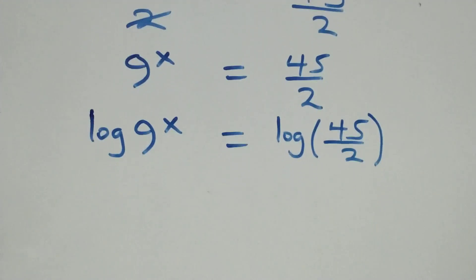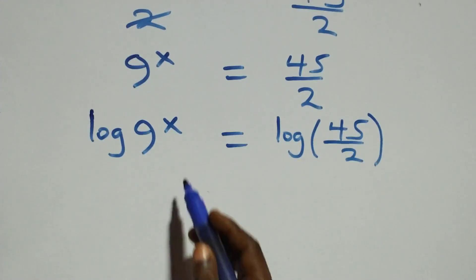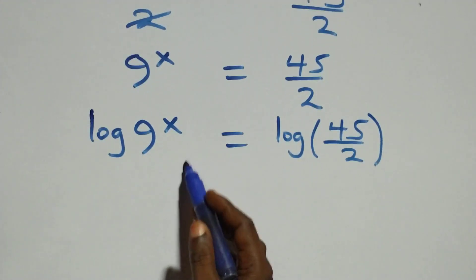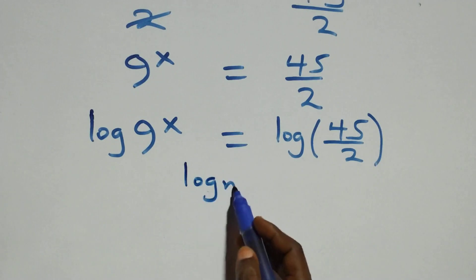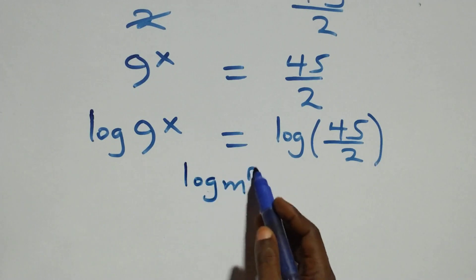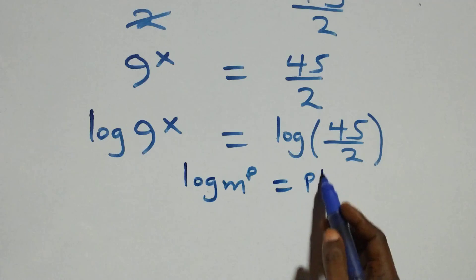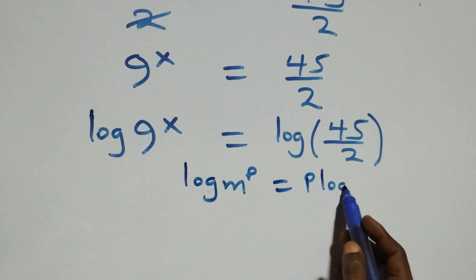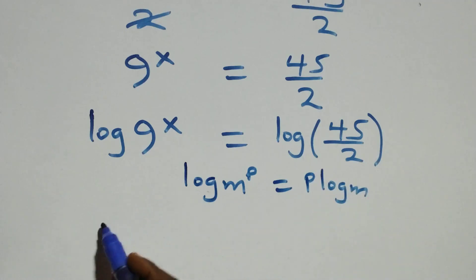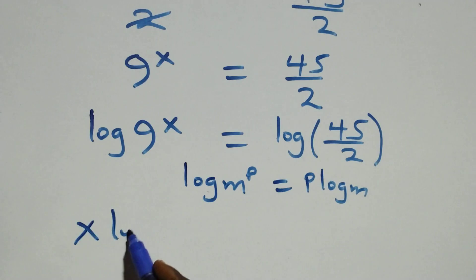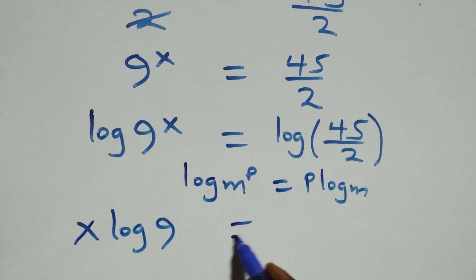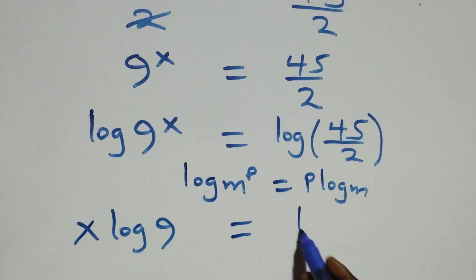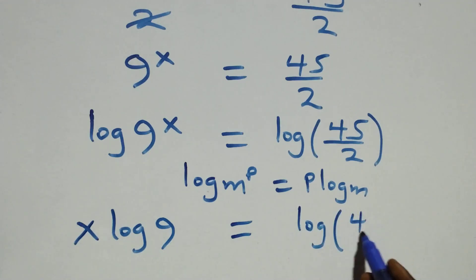The next step here, we apply the power rule of logarithms. When we have log m raised to power p, this is the same thing as p·log m. So what we have here becomes x·log 9 equals to log(45 over 2).